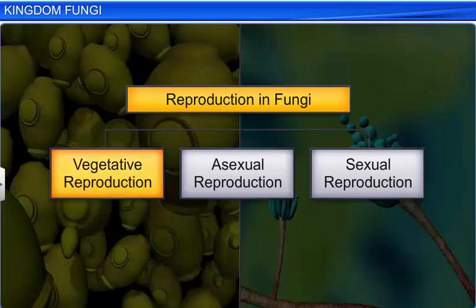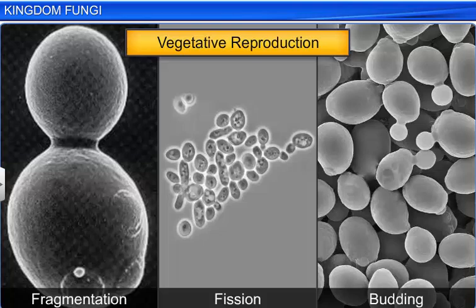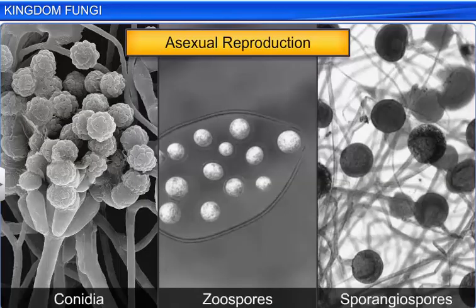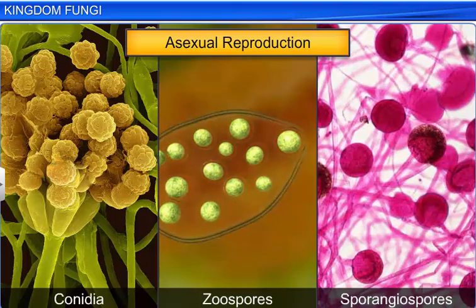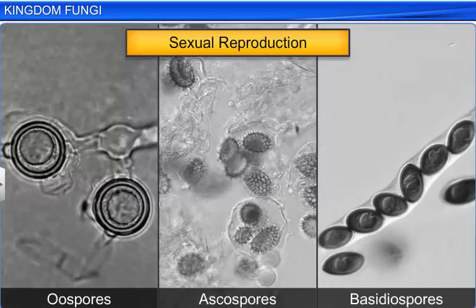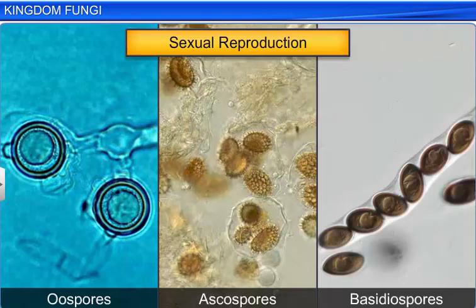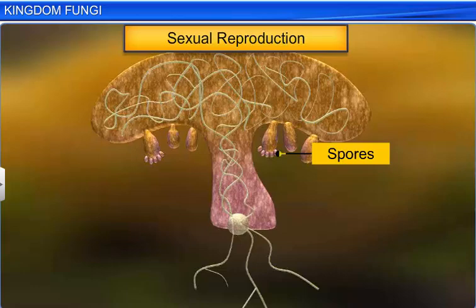Fungi can reproduce vegetatively, asexually, as well as sexually. Fungi reproduce vegetatively by fragmentation, fission, and budding. They can reproduce asexually by either conidia, zoospores, or sporangiospores. They also reproduce sexually by either oospores, ascospores, or basidiospores. All these spores are produced in structures called fruiting bodies.